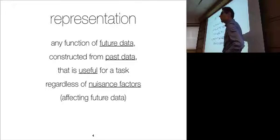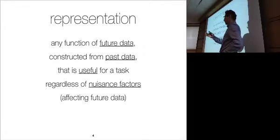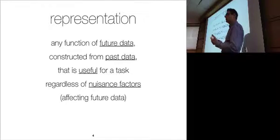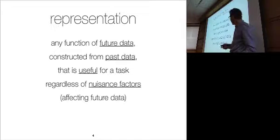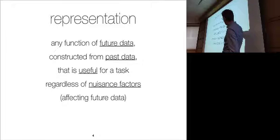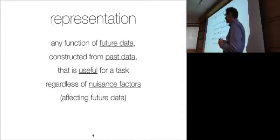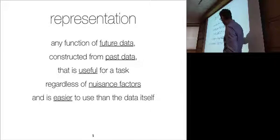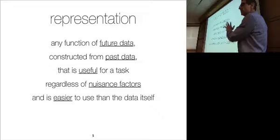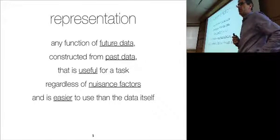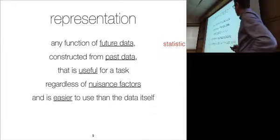We want representations that work no matter what accidents affect future data that have nothing to do with the task. For instance, if I want to detect a person in a scene, I want to do so regardless of vantage point, illumination, partial occlusion, pose, or clothing. There's an easy trivial solution: the best function of the data is the data itself — data processing inequality — so we also want this function to be somehow easier to manage than the data itself.